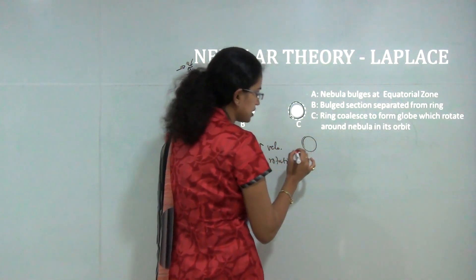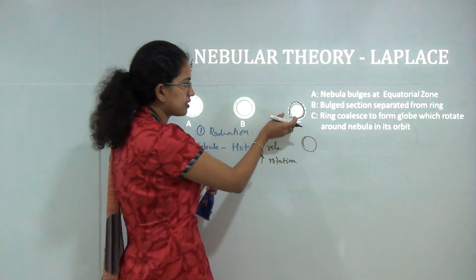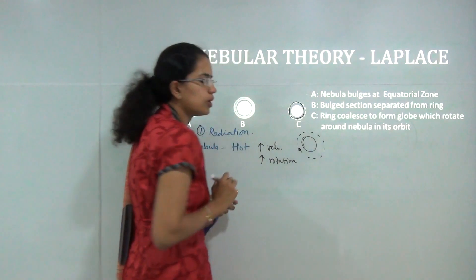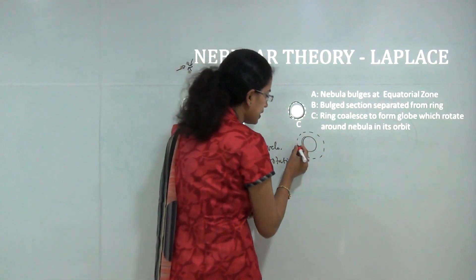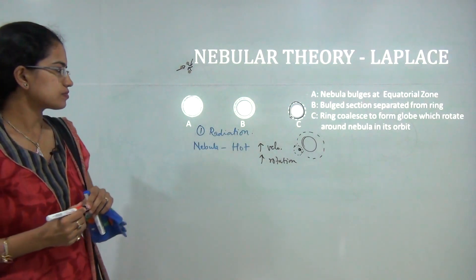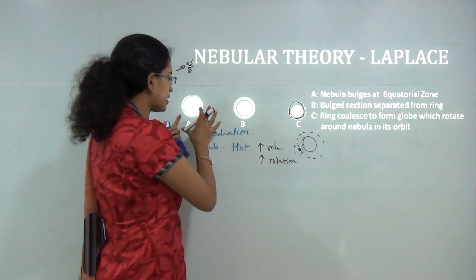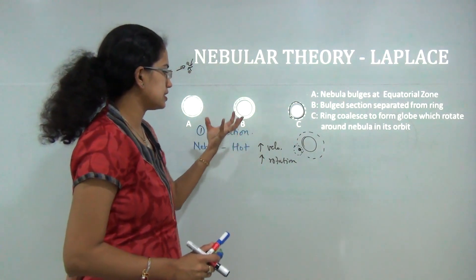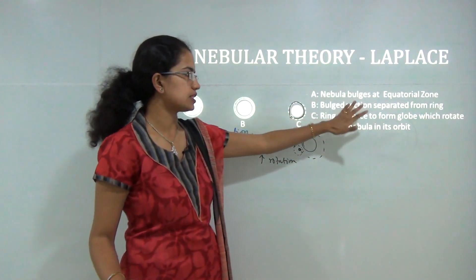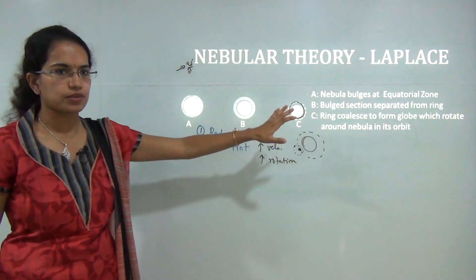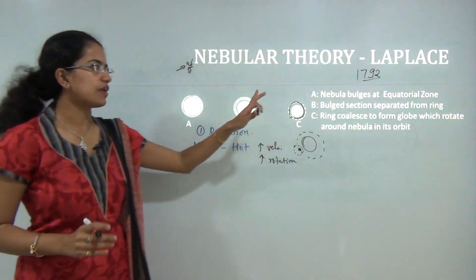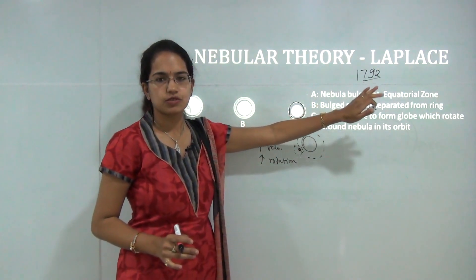Consider the nebula as the sun. The part that bulges out gets separated and tries to follow an orbit around the nebula or sun — this is the formation of a planet. Similarly, satellites form around the planet in the same fashion. His basic idea was that a hot nebula emits radiation; as it cools it shrinks, resulting in higher velocity and rotation, leading to centrifugal force and ring formation. This theory was propounded around 1792 to 1795.